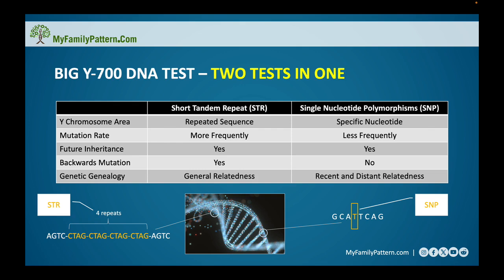SNPs, on the other hand, when they mutate, carry that mutation forward and they rarely — if ever — mutate backwards. Therefore SNPs are more precise in being able to trace these genetic lines and hopefully discover unknown ancestors. SNPs are really good not only at determining how recently someone is related, but they can also reach much further back in time.